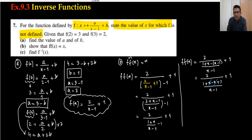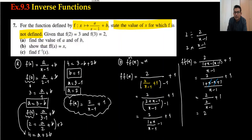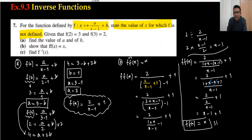The x terms cancel and 1 plus 1 gives 2, so we have 2 upon 2 upon x minus 1, plus 1. Moving things up: 2 divided by 2 upon x minus 1. Taking the reciprocal gives x minus 1 upon 2, and the 2s cancel. So we get x minus 1, and plus 1 outside gives x minus 1 plus 1 equals x. This proves f(f(x)) equals x.